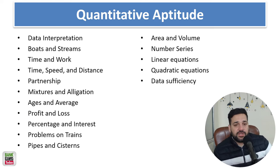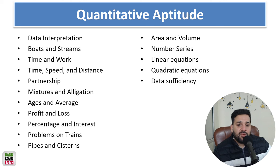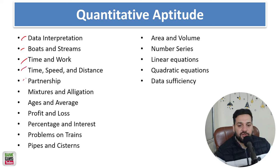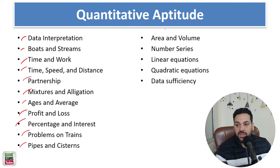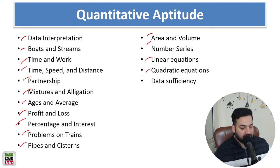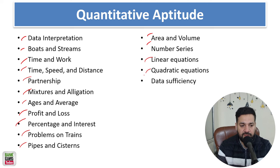In Quantitative Aptitude, you can expect one or two data interpretation sets, followed by boats and streams, time and work, time speed and distance, partnership, mixtures and allegation, ages and averages, profit and loss, percentages and interest, problems based on trains, pipes and cisterns, area and volume, number series, linear equations, quadratic equations, and data sufficiency.